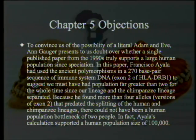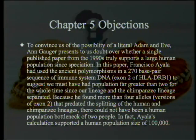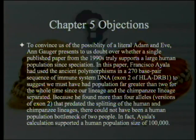In this paper, Francisco Ayala had used the ancient polymorphisms in a 270 base pair sequence of immune system DNA — exon 2 of HLA-DRB1 — to suggest that we must have had a population far greater than 2 for the whole time since our lineage and the chimpanzee lineage separated. Because he found more than 4 alleles — versions of exon 2 — that predated the splitting of the human and chimpanzee lineages, there could not have been a human population bottleneck of 2 people. In fact, Ayala's calculation supported a human population size of 100,000. He found 32 alleles, and the argument that it took 100,000 to keep that alive naturally was a reasonable deduction from those 32.